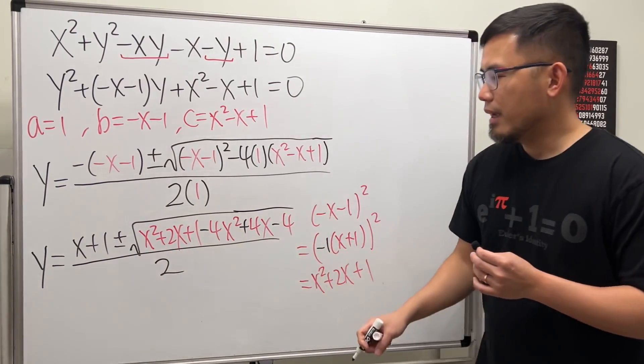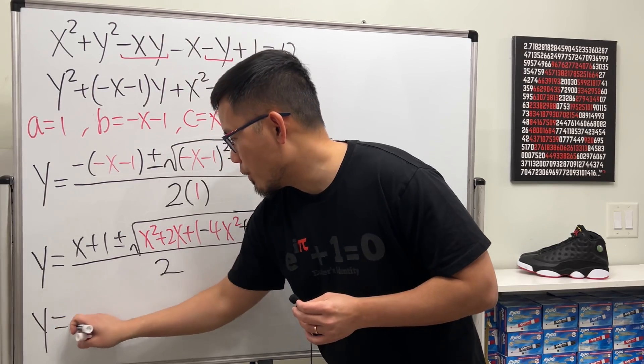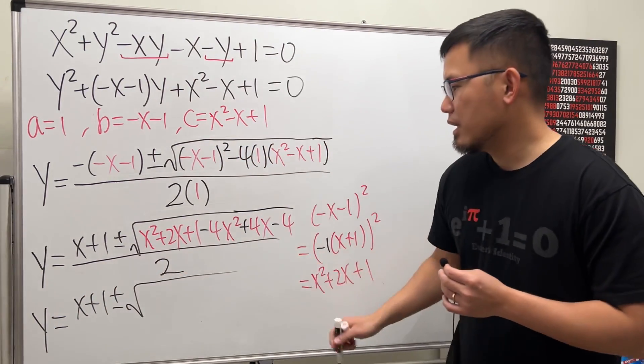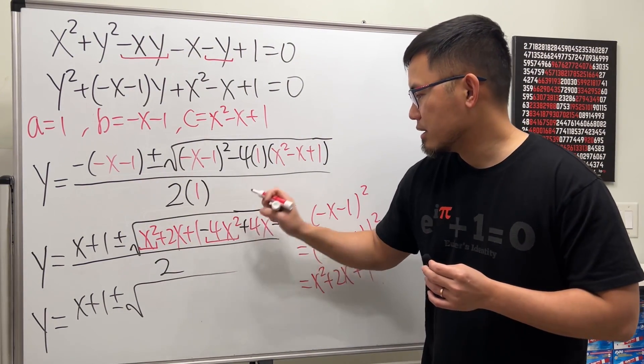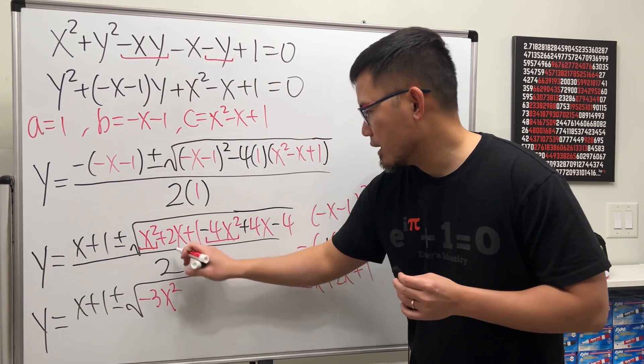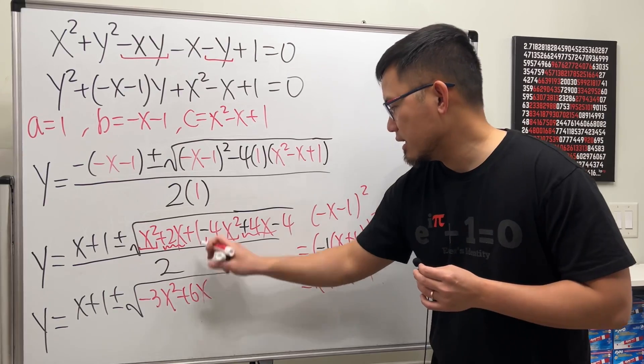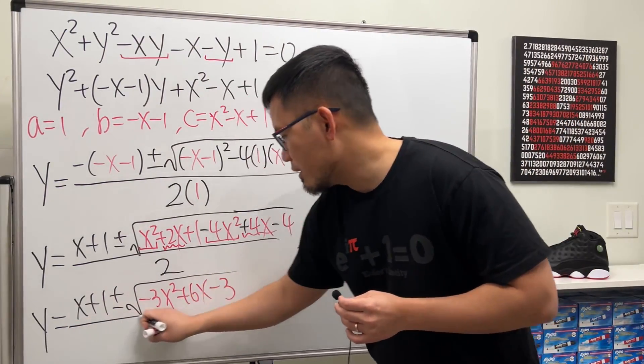And finally just clean that up a little bit. So we have y equals x plus one plus or minus square root, and here we are looking at x squared minus 4x squared, so that's negative 3x squared. And then this and that is plus 6x, plus 6x, and lastly we have minus three, and this is all over two.